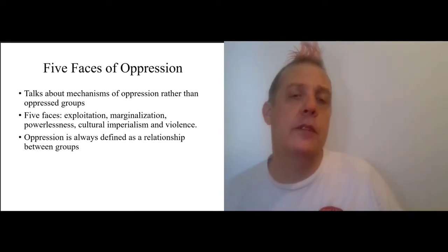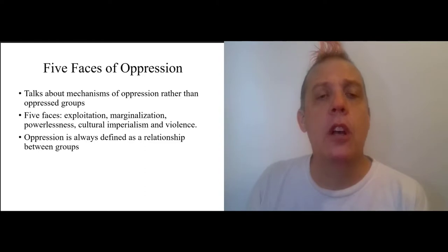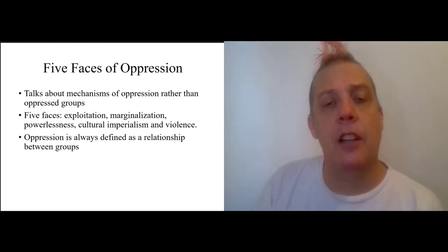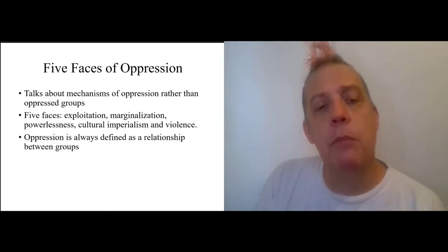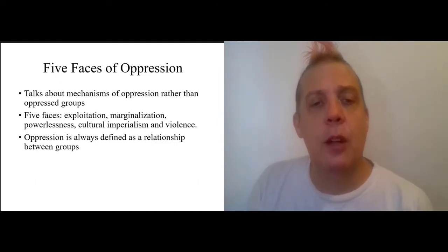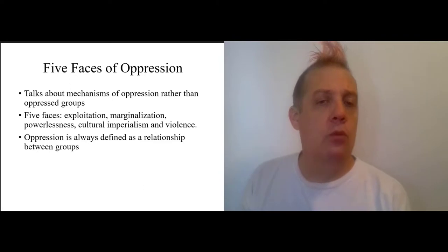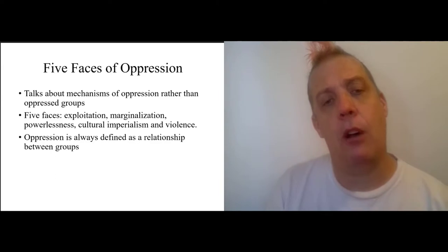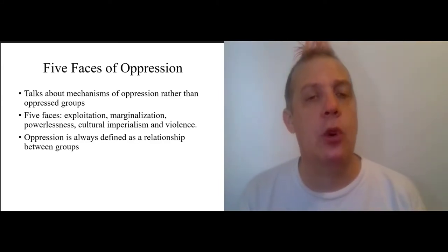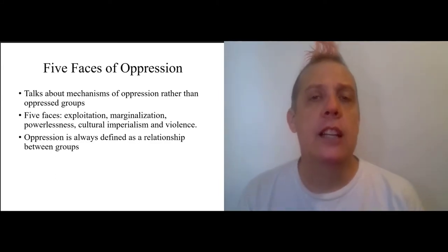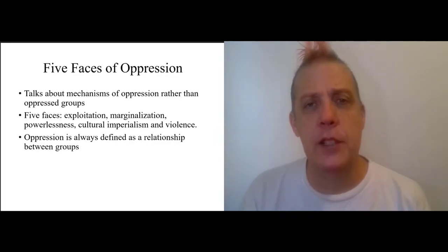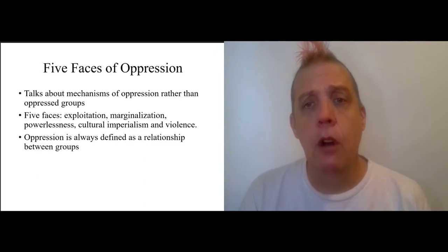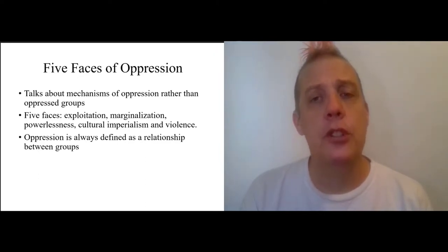The complementary essay was 'Five Faces of Oppression,' which talks about mechanisms of oppression rather than individual oppressed groups. This gives us a sense of what sorts of things we are trying to deal with when dealing with structural injustice. The five faces of oppression were exploitation, marginalization, powerlessness, cultural imperialism, and violence. The important thing to see is that they were defined as relationships between groups. Exploitation, for instance, was not about an individual landlord and an individual tenant — it was the systematic transfer of resources that are the products of labor from one group to another.